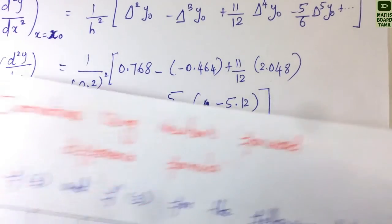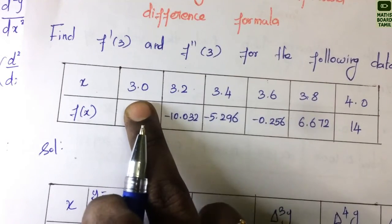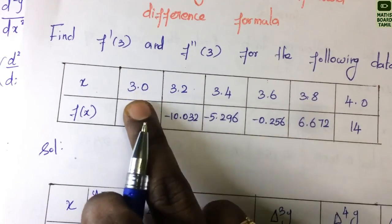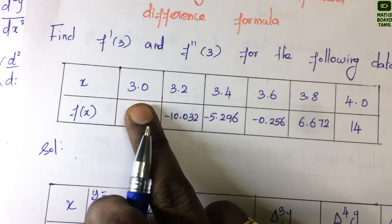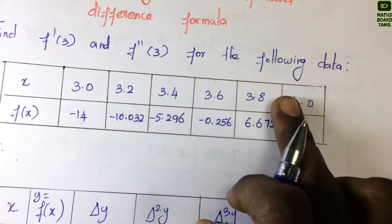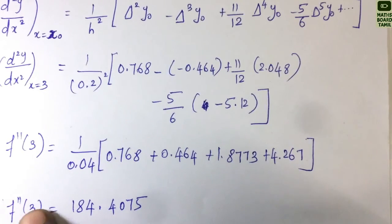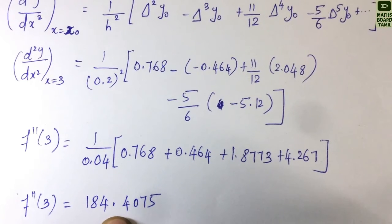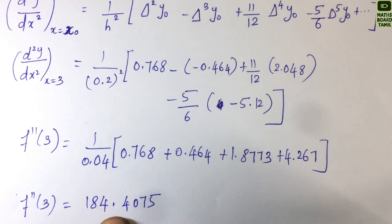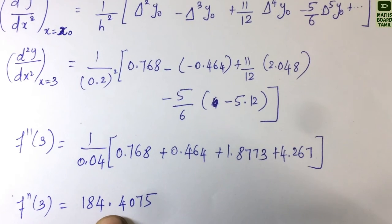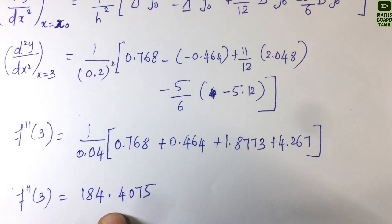Since we are finding the derivative at x = 3, which is the first value in the table, we use the forward difference formula. If we needed the derivative at the last value (x = 4), we would use the backward formula. Subscribe, comment, and share. Thank you.